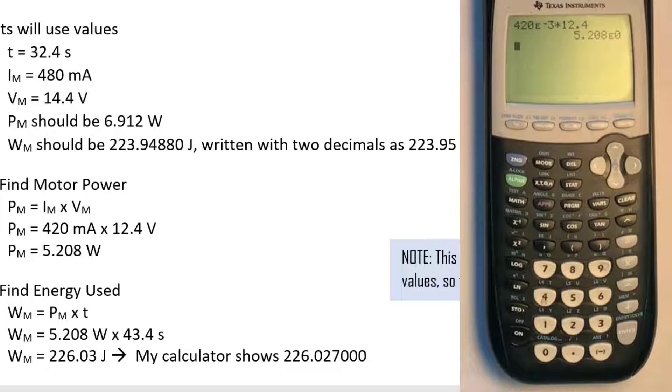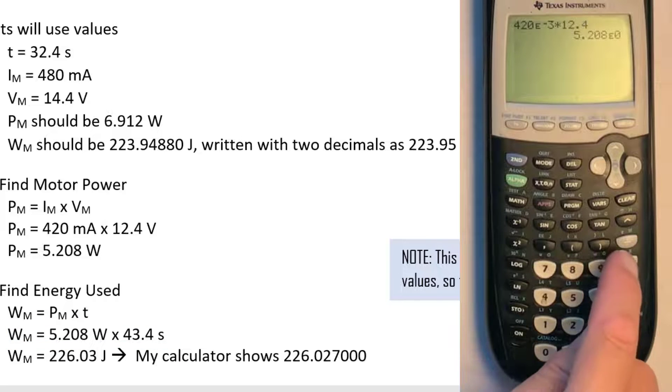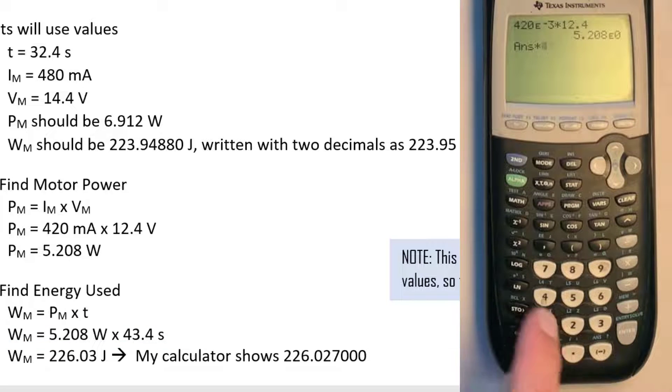I'm just going to leave that in my calculator. I'm actually going to write that down also in my worksheet. Even though that's not two decimal places, the final answer has to be two decimal places. Now I need that value in my next step, so I'm not going to remove it from my calculator. I've written it down but I'm going to leave it in there and just multiply it by 43.4.